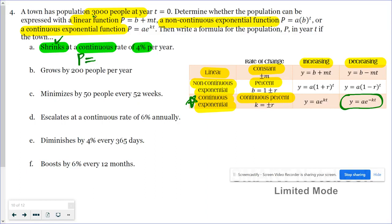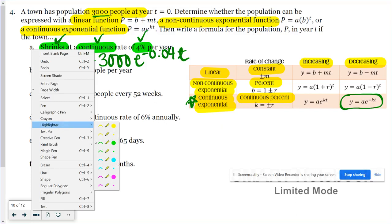It's for population, so we're using P. The initial population is 3,000. Since they said continuous, we're using base e. They said it's shrinking, so that means our exponent's going to be negative. We're going to turn this percent into a decimal, so 0.04. And of course, don't forget the t for each year. It's simple. They use the word continuous, and you were given a percent rate of change. Let's take a look at the next one.